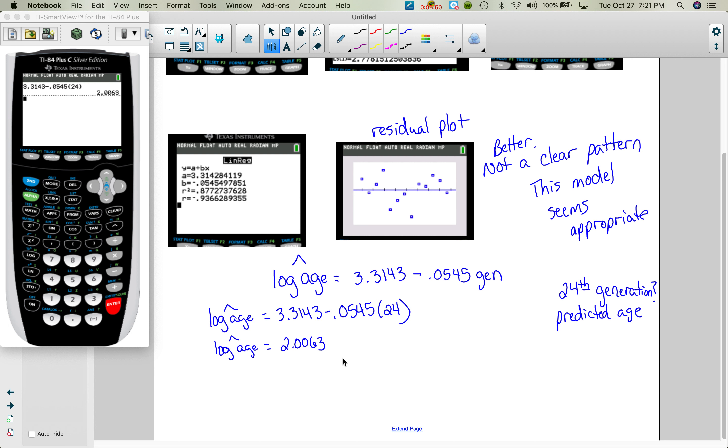Now obviously that's not the age, but we need to undo log of age. So it was a log base 10 is common log. So to undo log, we exponentiate with a base of 10. So I have to take 10 raised to this power. And I'm just going to go, well, I may as well type it in. And I get that the predicted age would be approximately 101 years.